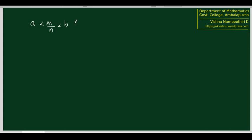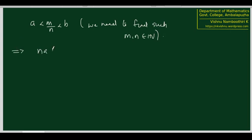To find M and N satisfying the condition that A less than M by N less than B, where M and N are natural numbers, we are going to work backwards. We are going to see if such an M and N exists, what are the properties that M and N must definitely satisfy. We will check this inequality first: A less than M by N less than B. If this inequality is going to be true, then this implies that NA must be less than M, which must be less than NB. And if NA less than M less than NB where N and M are natural numbers, then automatically A less than M by N less than B. Therefore these two inequalities are equivalent.